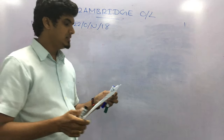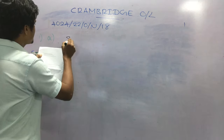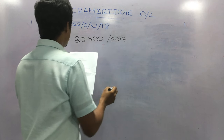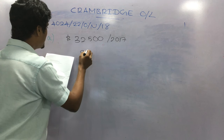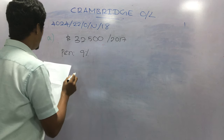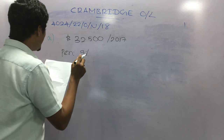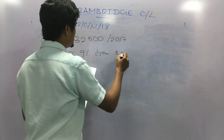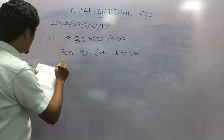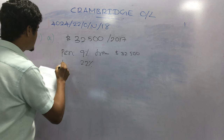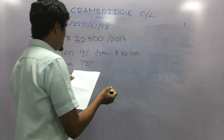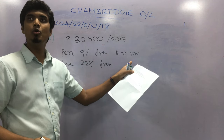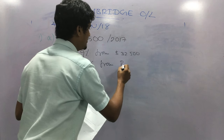Kamal earned a total of $32,500 in 2017. He paid 9% of this amount into his pension. From the remainder, he paid 22% tax on the remaining earnings. It's very important to note that the tax is calculated on the remainder, not the total amount.